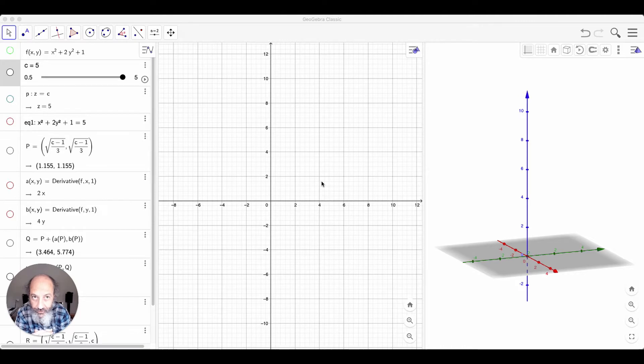In class, you have learned that the gradient gives the direction of fastest increase of a function of several variables. This means if you are at a point and look at the direction of the gradient, then the function will grow as fast as possible in precisely this direction.